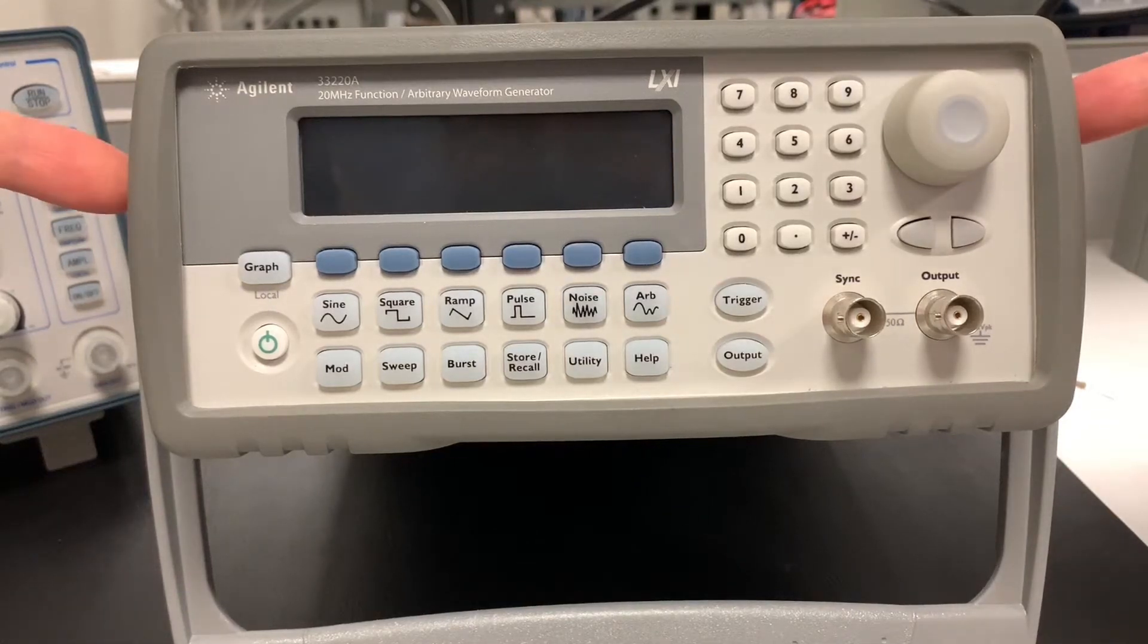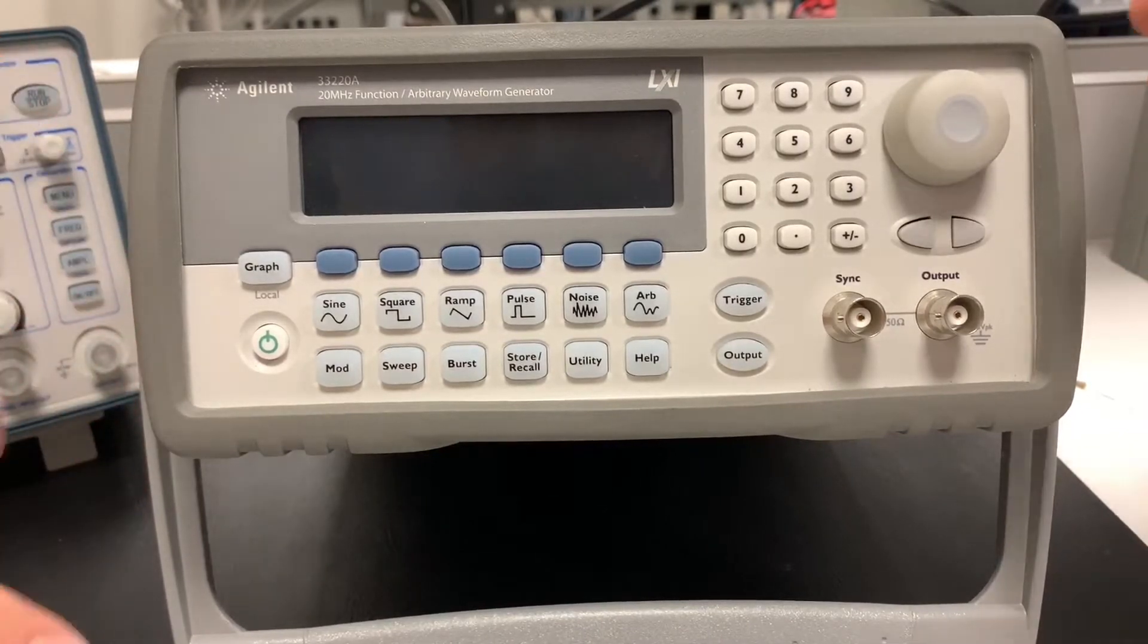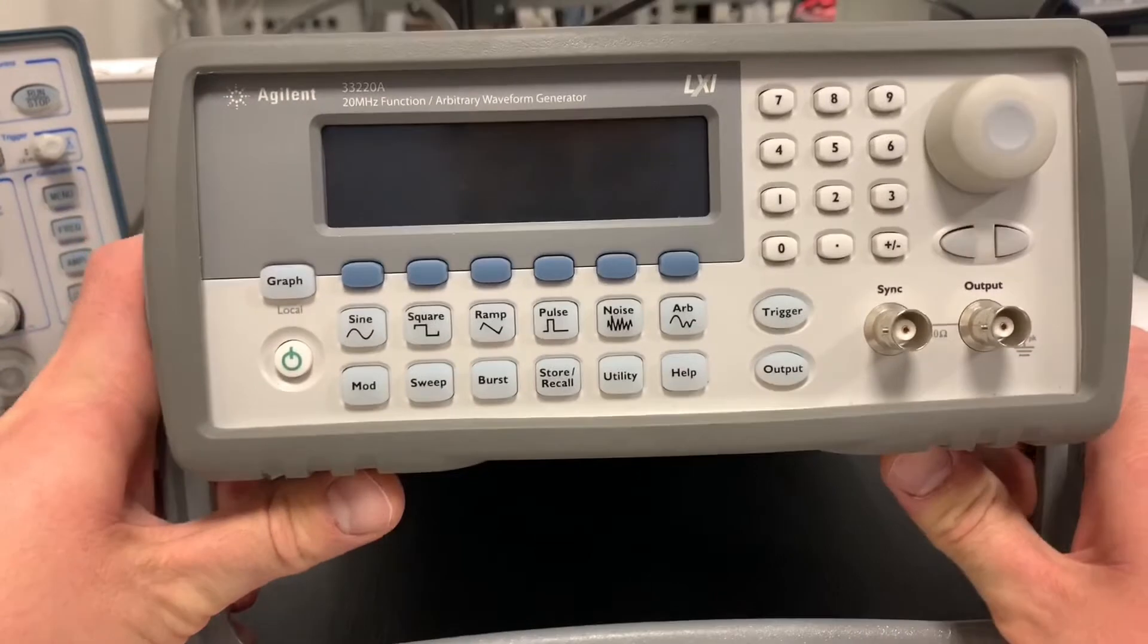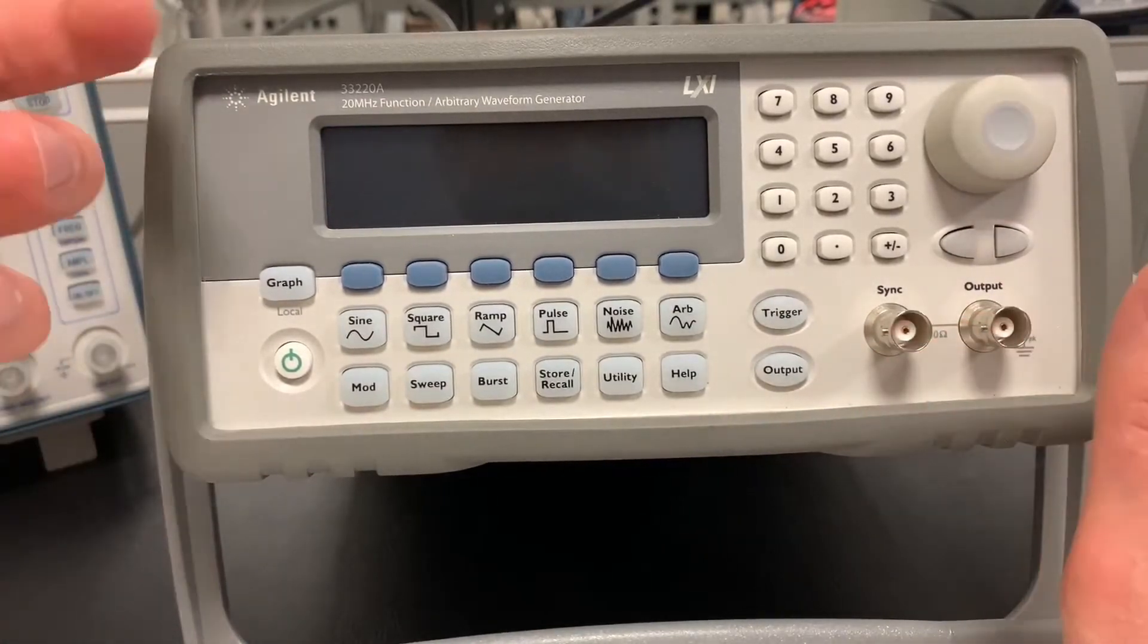In this video we're going to look at this Agilent 33220A, which is a 20 megahertz function generator. This machine is designed to put out waveforms, and what kinds of waveforms really depends on what we're trying to do.